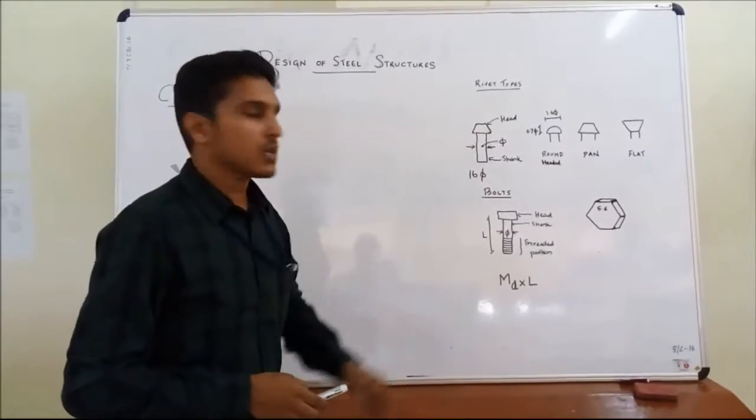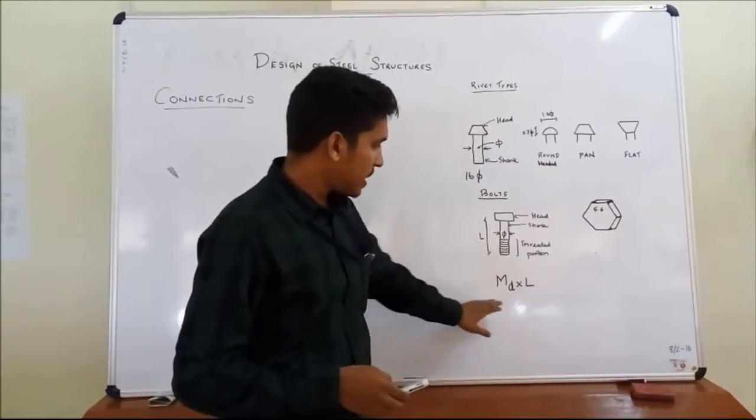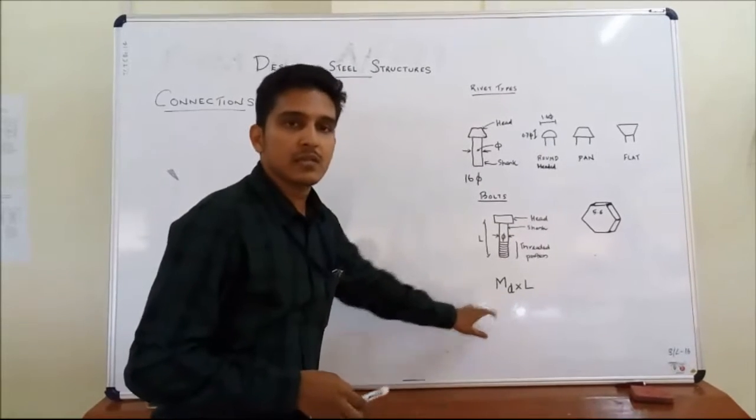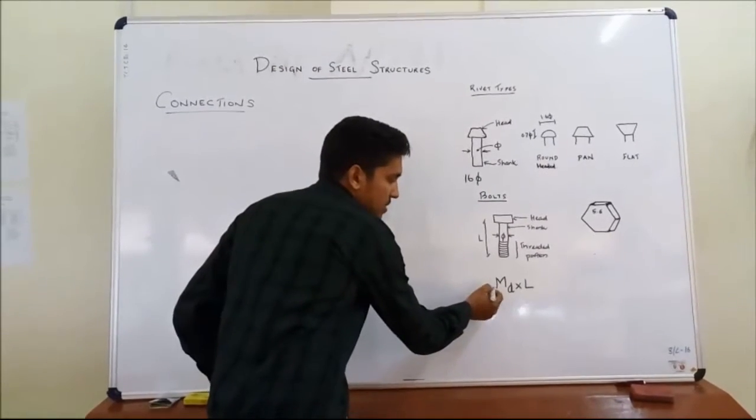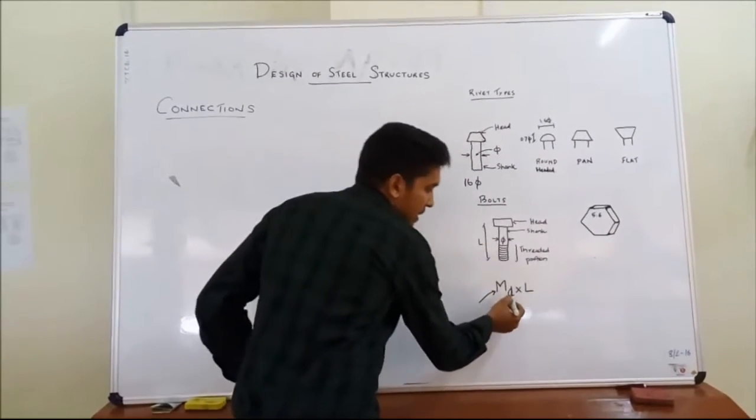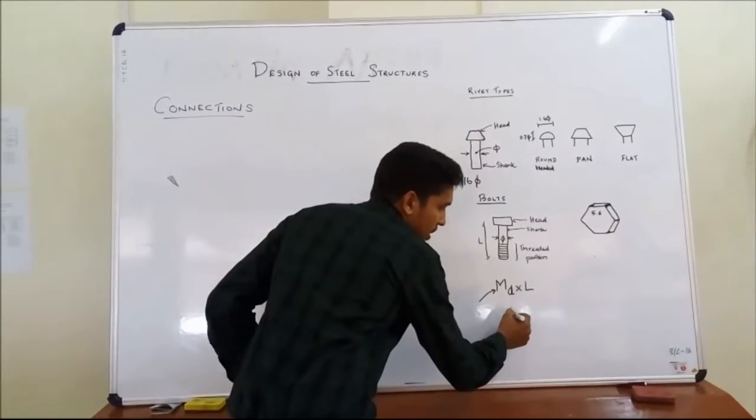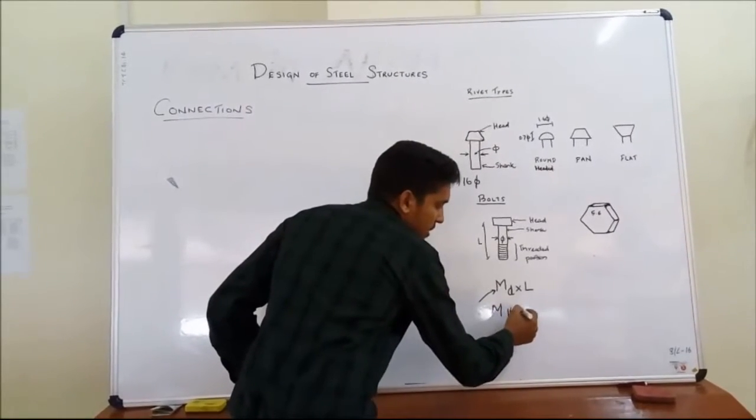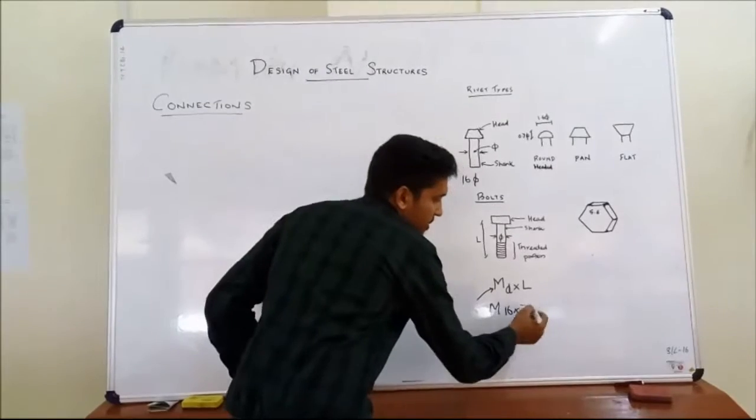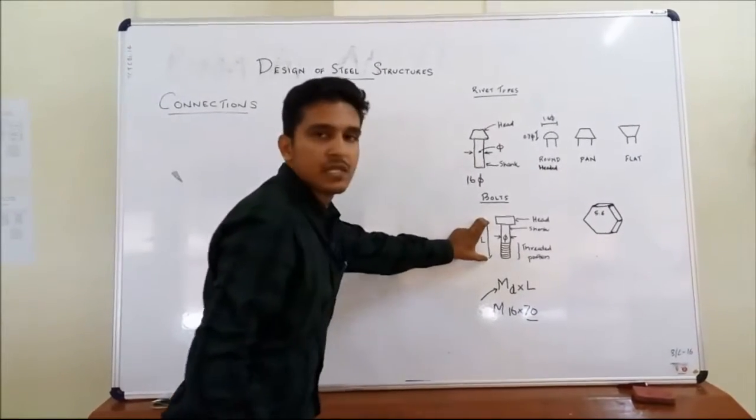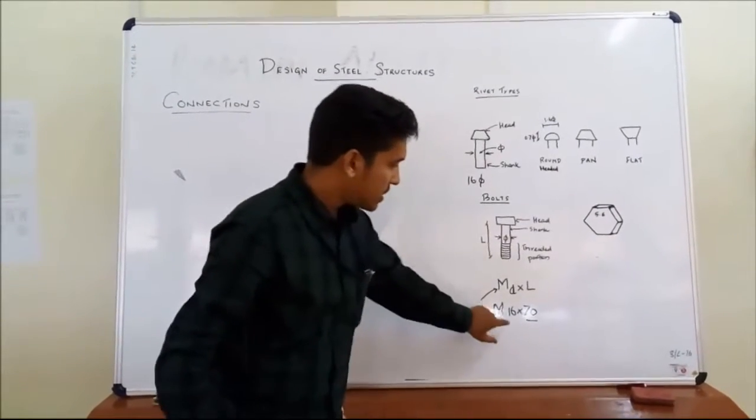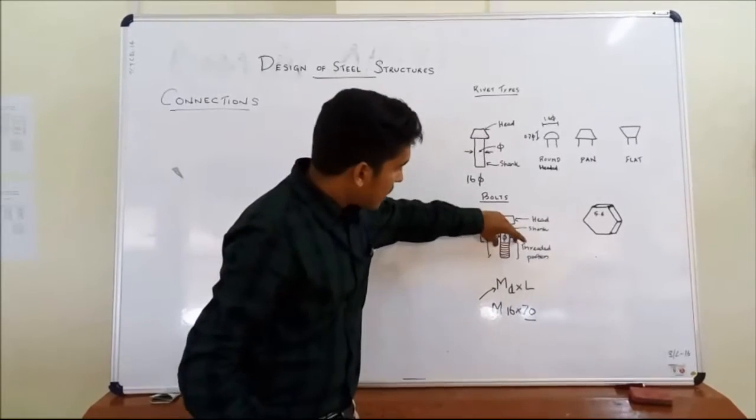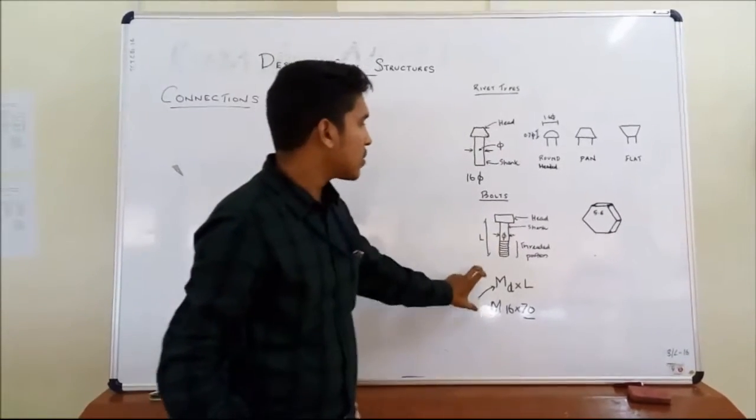Similarly, bolts. Bolts also, they are represented by a representation like this. Which means M is metric size, D is the shank diameter. For example, M 16 into 70 means 70 represents the length of the shank of the bolt. 16 represents the shank diameter. This is how we represent the bolt.